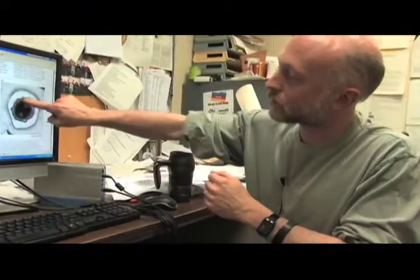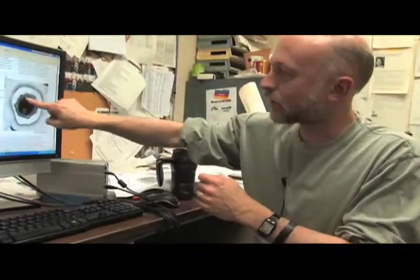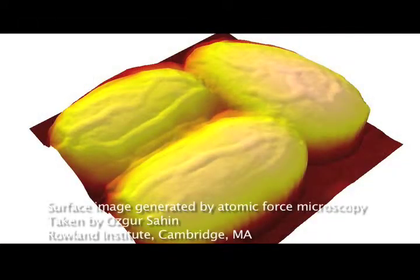The coat has this flexibility, it folds and unfolds like an accordion pleat. Well here are those folds. The spore interior, which is here, when it's dry has a relatively small volume.